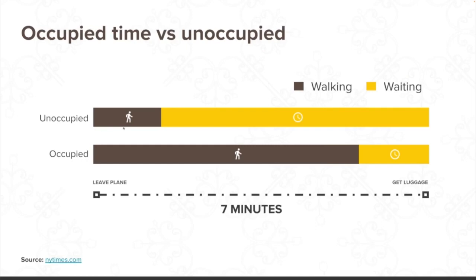Basically, they made people walk further to make the waiting time for the suitcases feel shorter. In the beginning, people walked for two minutes and then waited for five minutes, versus walking for five minutes and then waiting for two minutes — and from that, complaints dropped. When you're hacking people's perception, you have to think about what is realistic and meet some of their expectations.